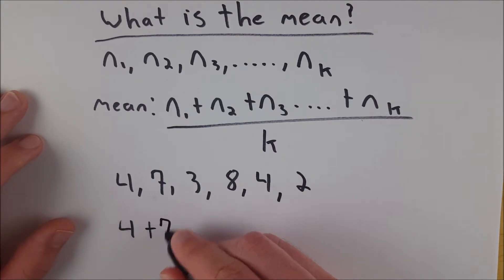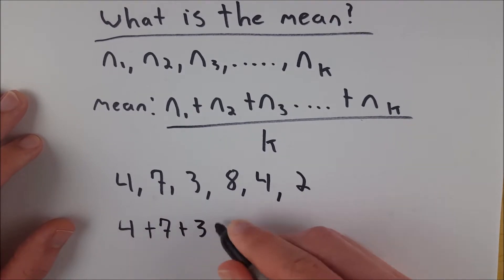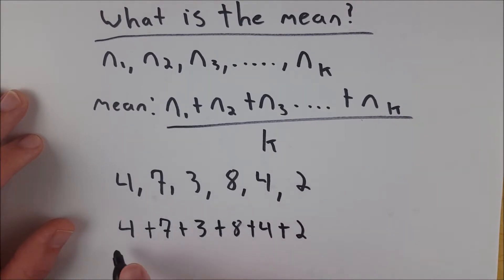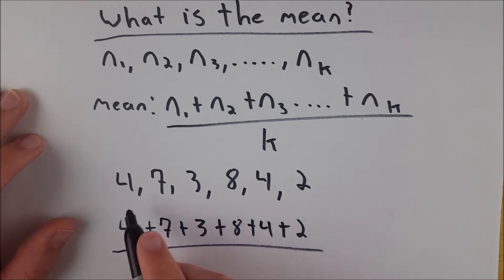So we've got four, plus seven, plus three, plus eight, plus four, plus two. And then this is going to be divided by our total number of data points, which as we can see here, is six.